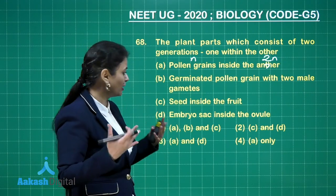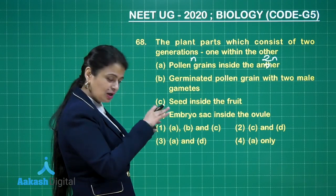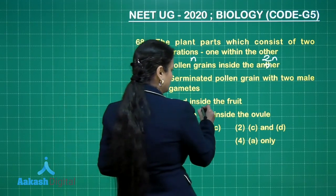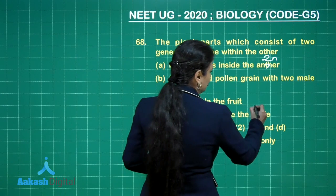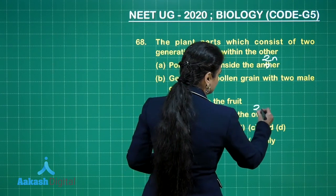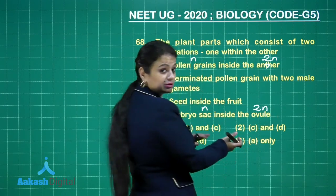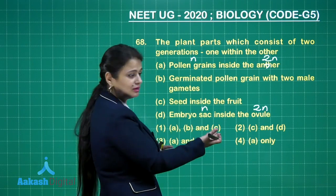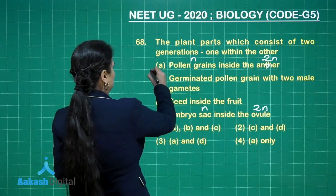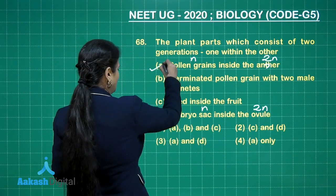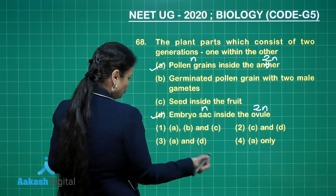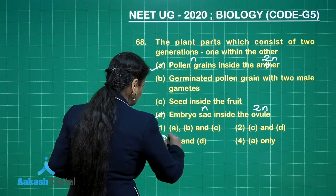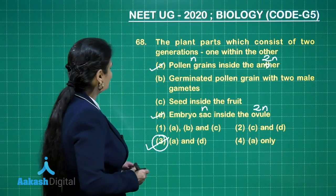The embryo sac is haploid and it is present inside the ovule, which is diploid. So this is again one generation within the other. The right options are A and D, making the correct answer option number three.